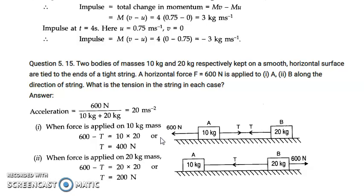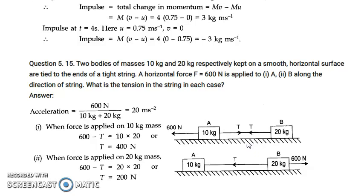In the second part, the force is applied to block B. The equation becomes 600 − T = 20×20, giving T = 600 − 400 = 200 Newton. So when force is applied to B, the tension is 200 N. I hope both cases are clear. Thank you.